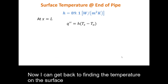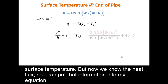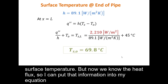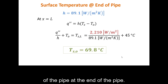Now I can return to finding the surface temperature. I had already isolated the equation, but couldn't solve it without knowing the heat flux. With the heat flux now known as 2,210 W/m², I substitute that value and the other known quantities into the equation to find the pipe surface temperature at the outlet.